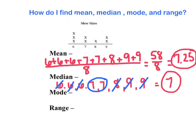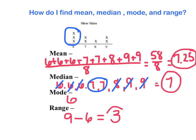And the mode — the mode is found by finding the data that occurs the most. And if you can see up top here, the size 6 shoe is the one that occurs the most, so my mode is 6. My range is the difference between my highest number and my lowest number. My highest is 9 and my lowest is 6, so 9 minus 6 is equal to 3. My range of shoe sizes is 3 sizes.